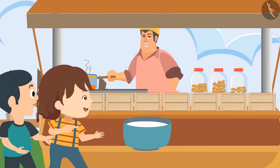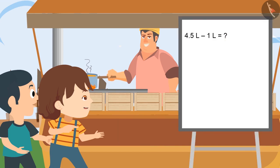Daddy, how much milk have you used for making tea? Son, I have used 1 litre of milk. Okay. Now tell me, if I have used 1 litre of milk out of 4 and a half litres, then how much milk is left? After taking out 1 litre, we are left with 3.5 litres of milk. Very good, Pinky.